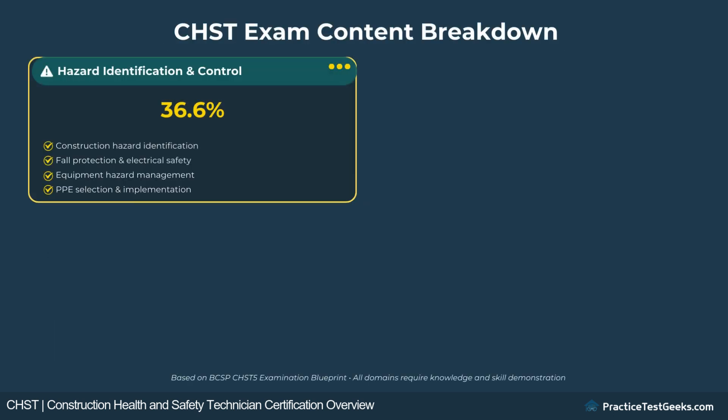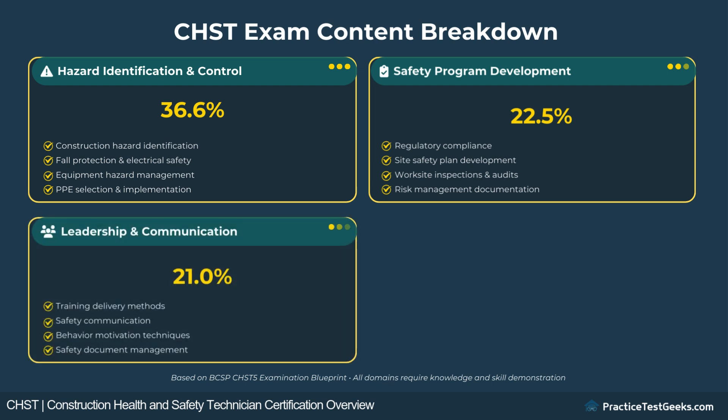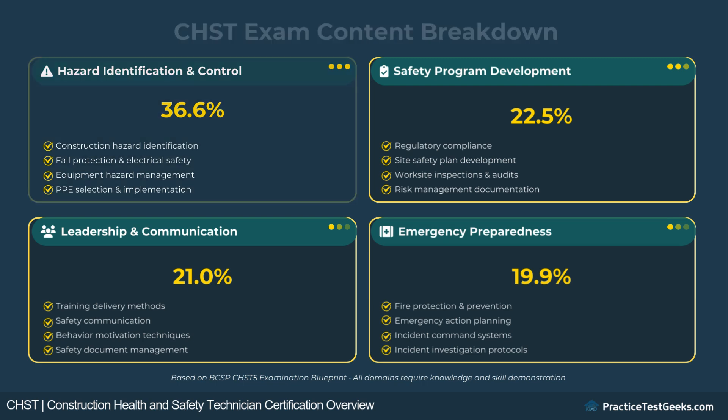The CHST exam covers four main domains. Hazard identification and control makes up 36.6% of the exam. Safety program development accounts for 22.5%, leadership and communication represents 21%, and emergency preparedness comprises 19.9% of the questions.